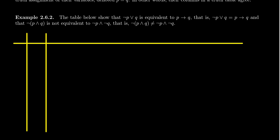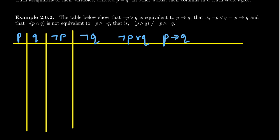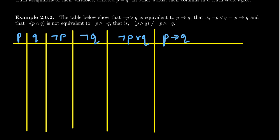So we have our primitives P and Q. Then we think of the compound statements that involve P and Q — there's a not P that's going to come into play. And then for reasons that aren't apparent yet, I'm also going to put a not Q there. So then we can do not P or Q, and then P implies Q. We then separate our columns with a line just to make it easier to read.